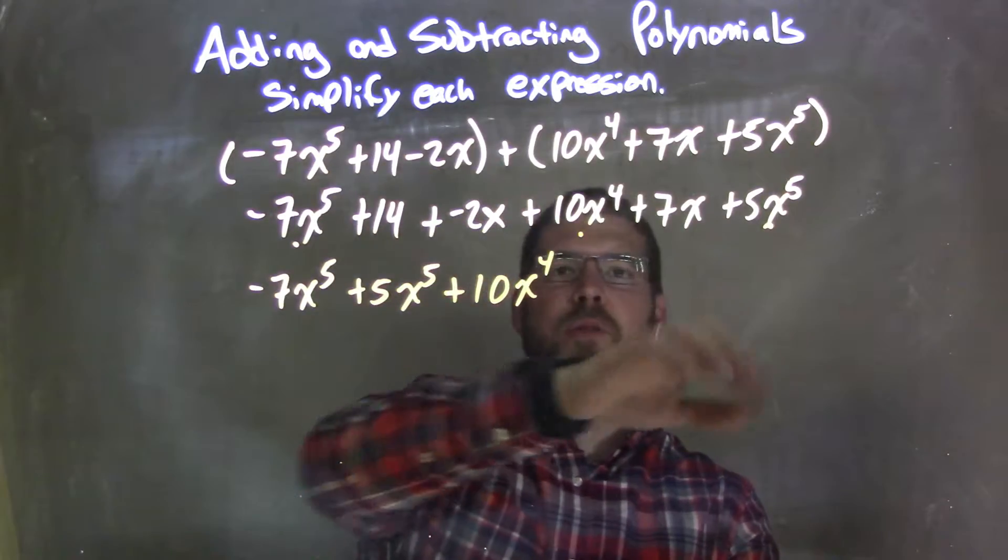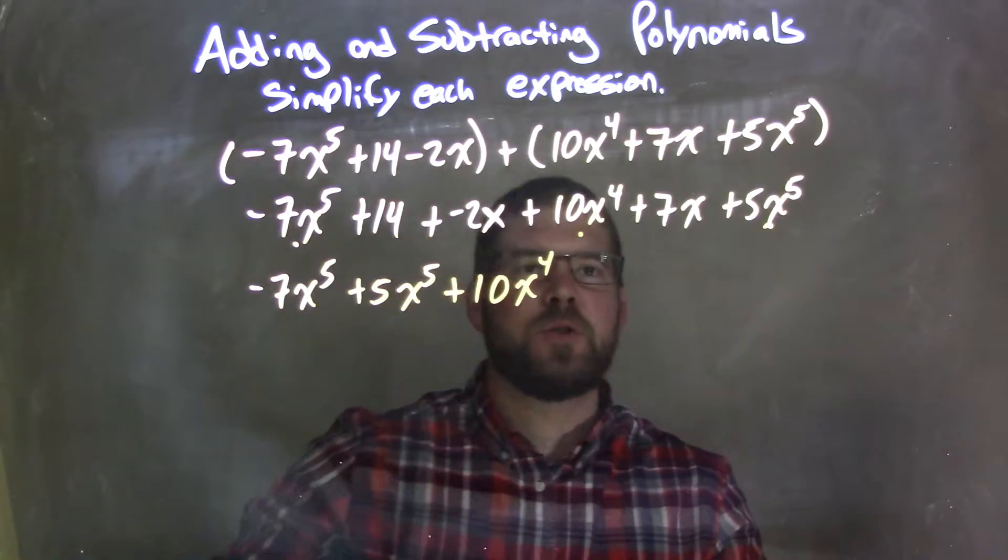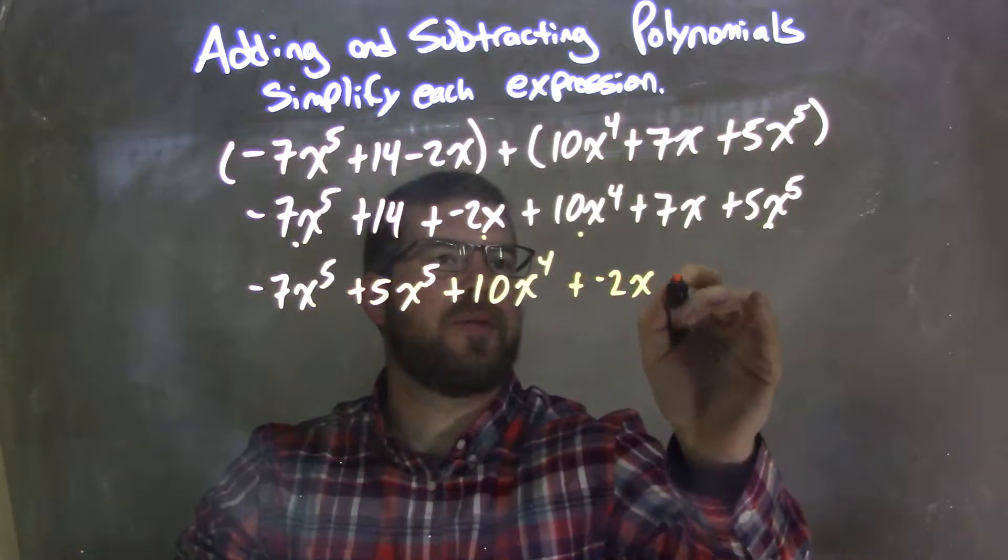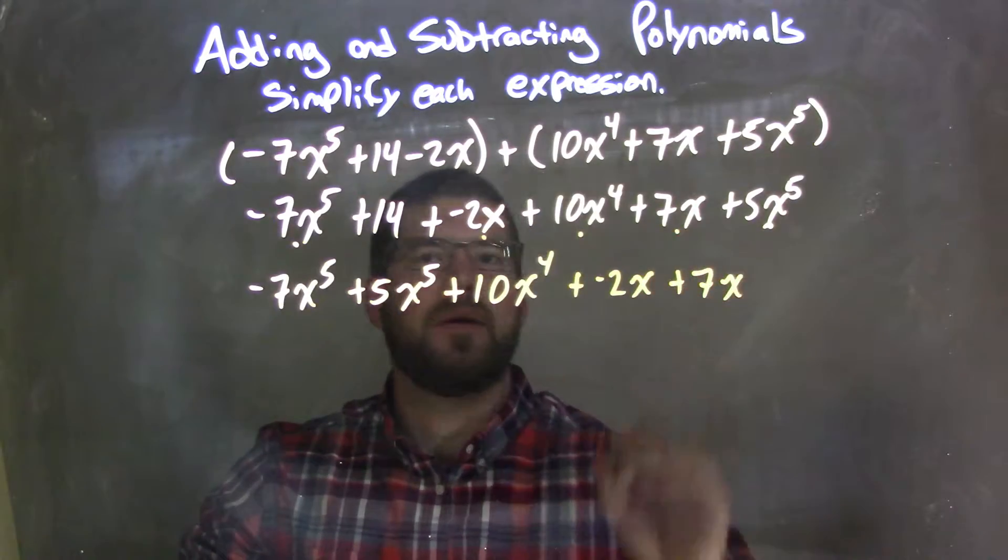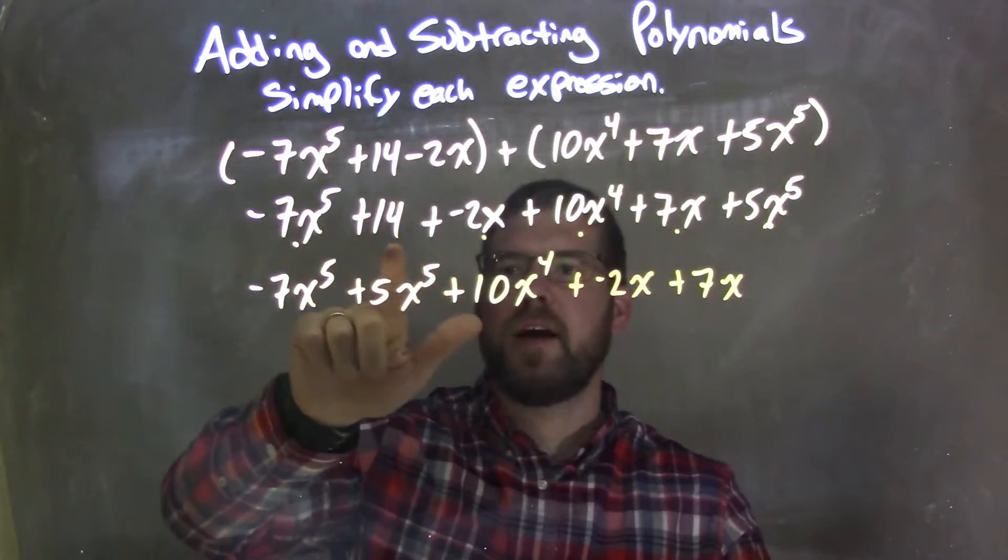I see nothing else to the 4th. Do I see 3rd power? No. 2nd power? No. The 1st power: we have -2x and plus 7x. Nothing else to the 1st power. The constant is left: just 14.